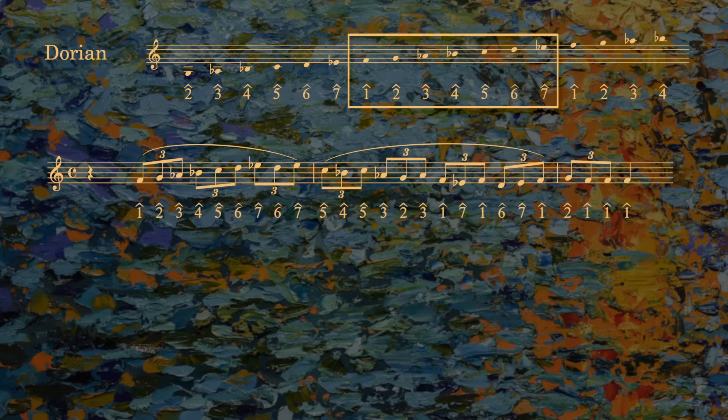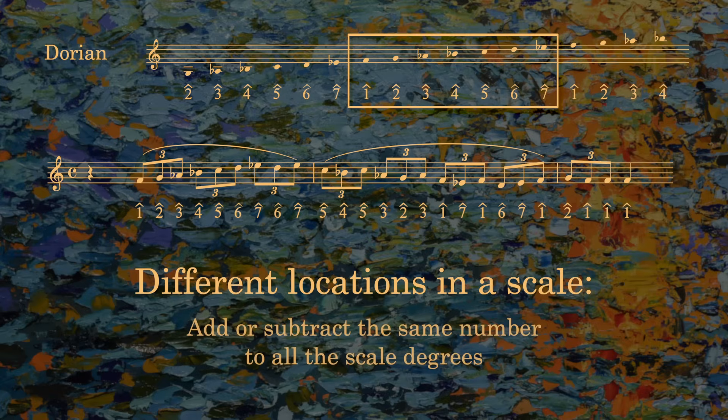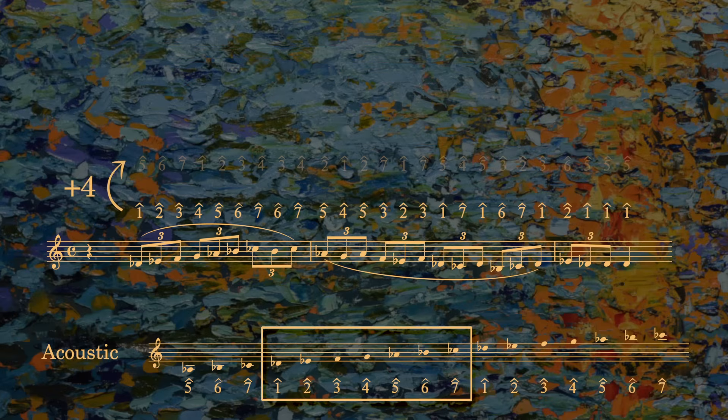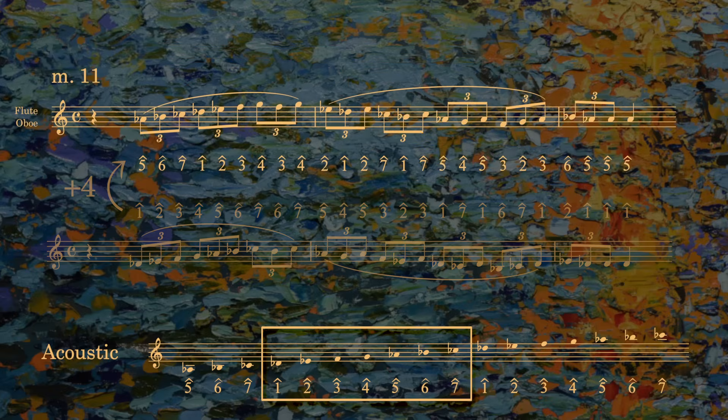In the examples so far, the scale degrees were preserved. But we can also move an idea to a different location in the scale by adding or subtracting the same number to all the scale degrees. Let's try mapping the original melody onto the acoustic scale, which is a mode of melodic minor. I'll preserve all scale degrees first, and end up with this. If I add 4 to all scale degrees, then it starts on A-flat, like this.